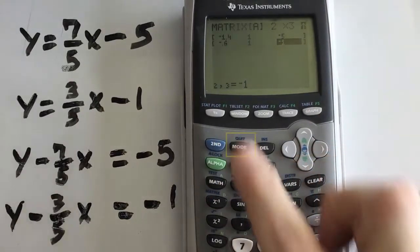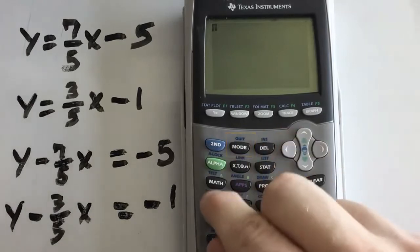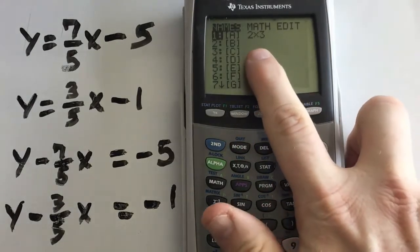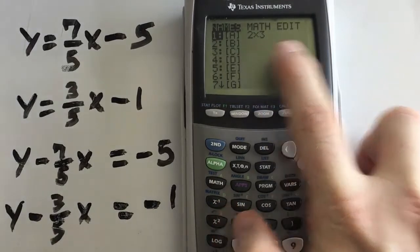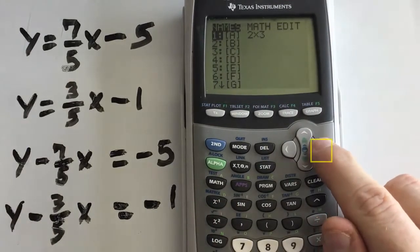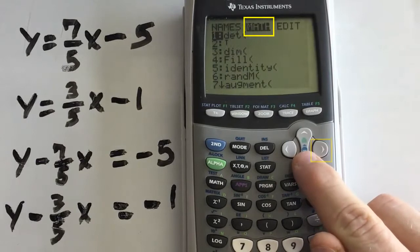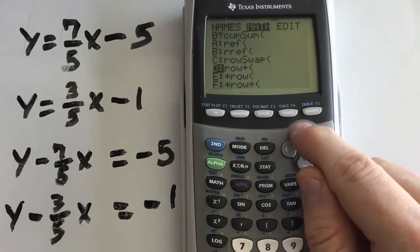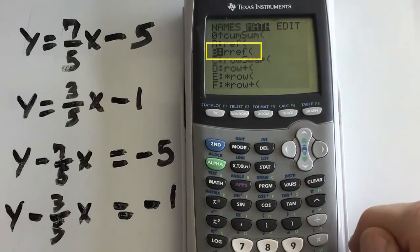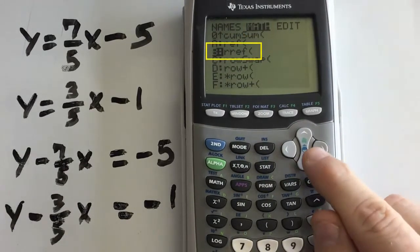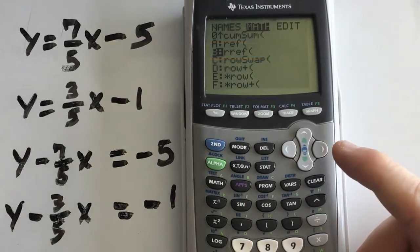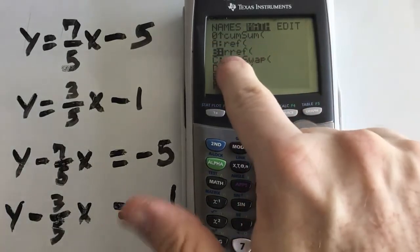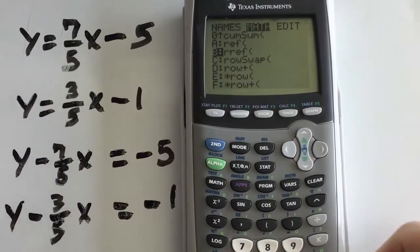I'm going to go back into the matrix menu and come over here to math. Now, notice how this is 2 by 3. That's because there's information there. So, that means I typed something in. So, now when I go to math, I can actually do something with that matrix. And what you're going to look for is down towards the bottom. And it's called RREF. When you get to linear algebra, you'll learn it's row reduced echelon form. But for now, all you need to worry about is that menu option will give you the solution you want.